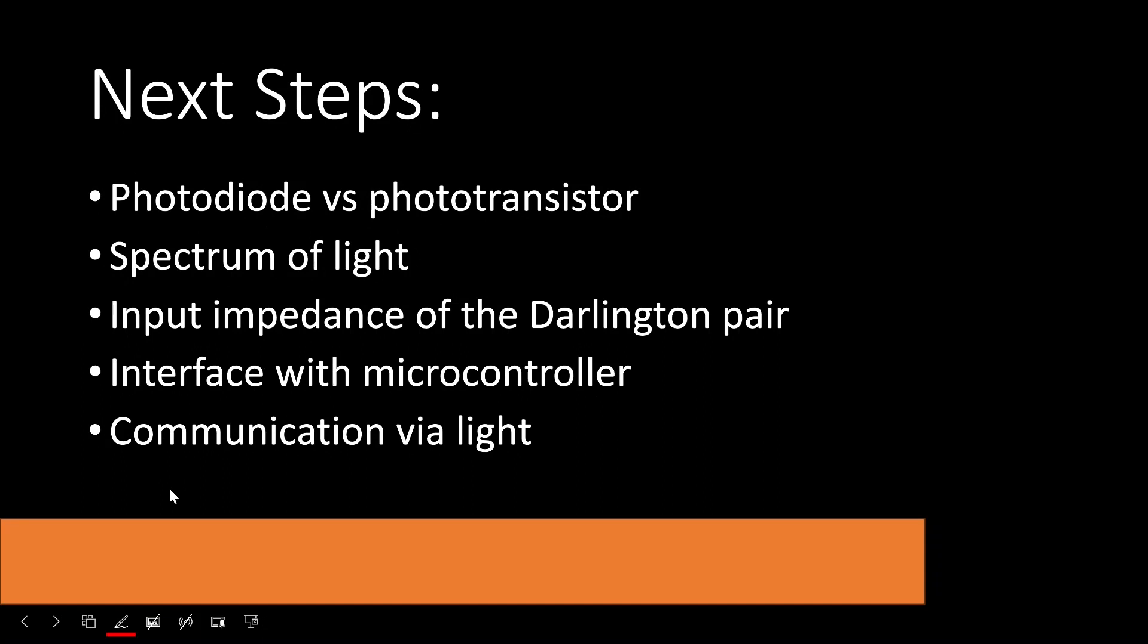And that brings us to some of the next steps that you might want to take. For example, you may want to explore the differences between a phototransistor and a photodiode. You may want to do further experiments where you explore the spectrum of light. As you recall, we looked at the spectrum of this particular photodiode and found out that it did respond to red, but it may have responded better to other colors. There's certainly more room for exploration with this Darlington pair. This would be an excellent circuit to explore with a microcontroller. And while you're there, you might want to try communication via light.